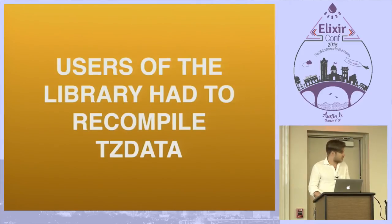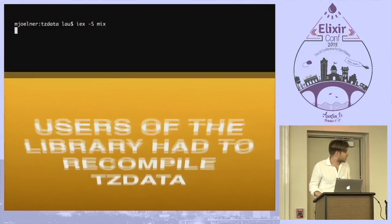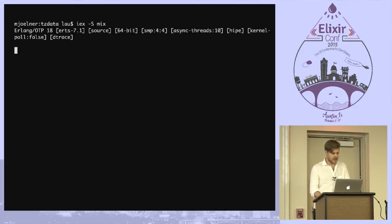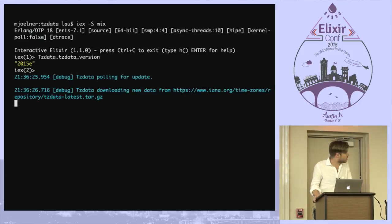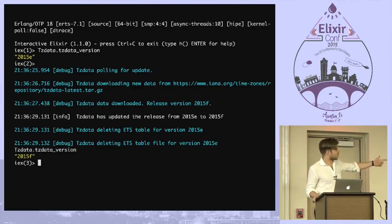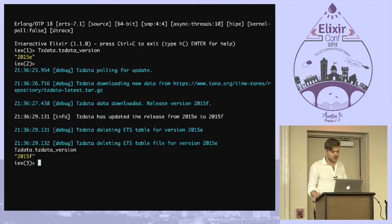Last night I got an email — that's how it works — that a new version of the timezone data came out. The data was updated 10 times last year in 2014. With the new version — called G — instead of me having to do all that, I spent the time playing with this animation in Keynote. This video shows how it works now: you type a command to show the current version — it's 2015E — then it checks for a new version, and in less than four seconds you have the new version. It's used with ETS tables, so you don't have the memory problems of compiling, and basically it's all automatic.